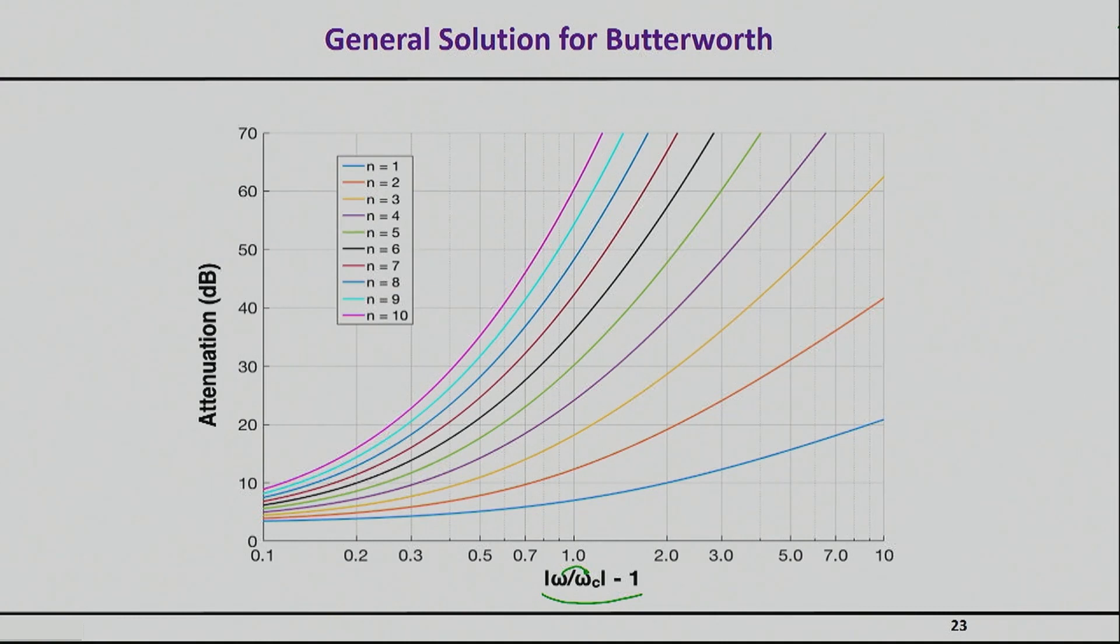For example, the requirement might say that at 20% higher frequency than your cutoff, you must have a rejection of let's say 30 dB. So in that case you will go 20% higher than the cutoff, you will be right here, you need a specific rejection.